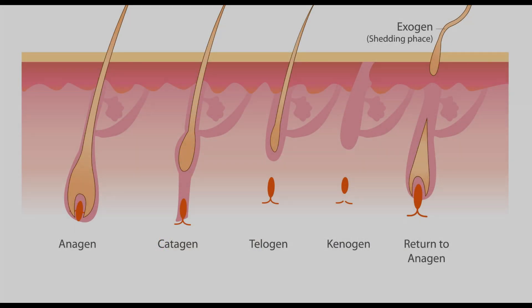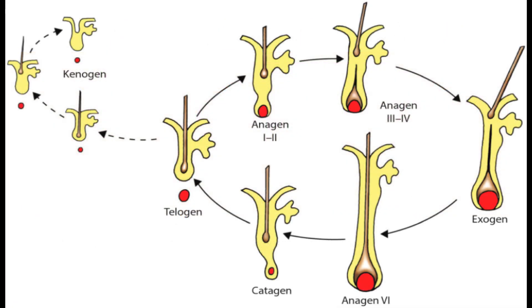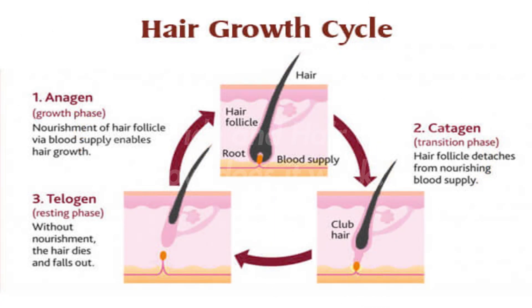There are also some lesser-known phases which primarily deal with how we split the telogen phase. There's the exogen phase, which occurs after the telogen phase — this is where hair primarily sheds out, since telogen can be thought of as just the resting phase in general. And then after exogen, there's the kenogen phase, which is the empty hair follicle phase. This is the stage in which the stem cells start to get ready to create a new hair going into the anagen phase. But really, there are primarily three phases: anagen, catagen, and telogen.